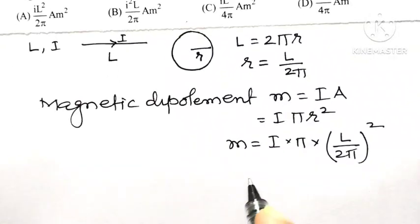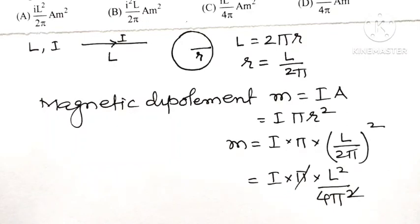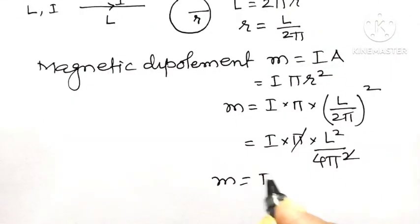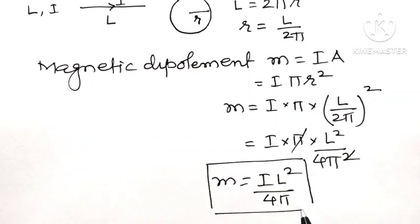L divided by 2π whole square, that is equal to L². That is equal to I into π into L² divided by 4π². So this one π gets cancelled with this. Therefore we have magnetic dipole moment is equal to IL² divided by 4π.